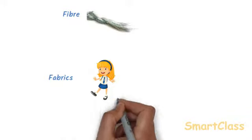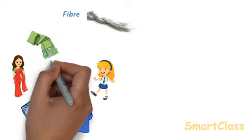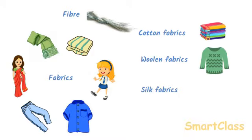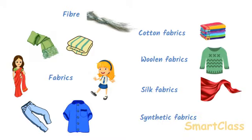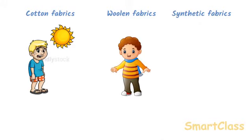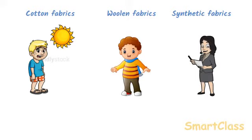Different types of fabrics are used to make school uniforms, shirts, pants, sarees, shawls, blankets, etc. The commonly used fabrics are cotton fabrics, woolen fabrics, silk fabrics, and synthetic fabrics. We usually use cotton fabrics during hot summers and woolen cloths during cold winters. Cloths made from silk and synthetic fabrics are most comfortable when the weather is neither very hot nor very cold.